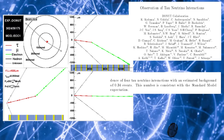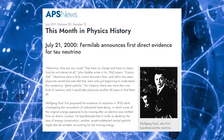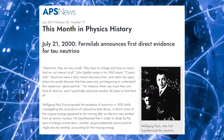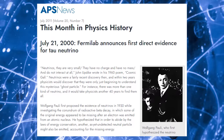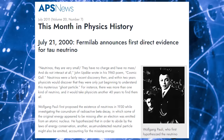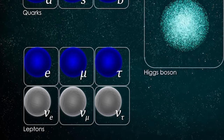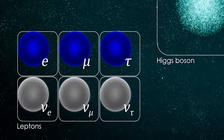Using this detection methodology, the DONUT experiment discovered four instances of a neutrino interacting with an atomic nucleus to produce a charged Tau lepton that rapidly decayed — that's the signature of a Tau neutrino interaction. On July 21st, 2000, they announced the first direct evidence of Tau neutrino interactions, and hence the first direct detection of the Tau neutrino, the third flavour of neutrino known to particle physics.